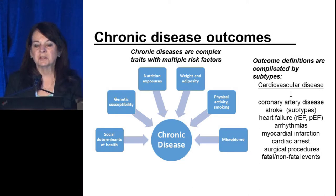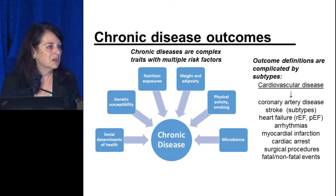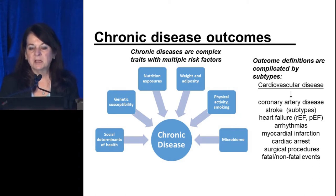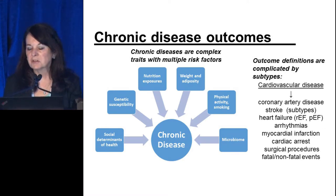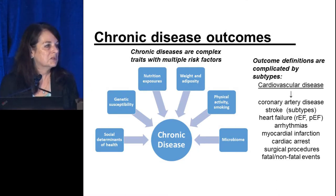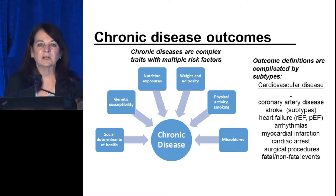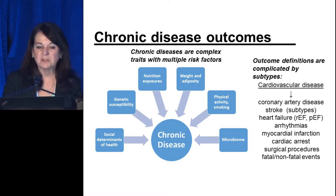The outcomes definitions are also complicated by subtypes. Iron deficiency anemia is relatively easy to diagnose and measure with a test. With cardiovascular disease, however, we have many subtypes: various forms of coronary artery disease, stroke — which can be occlusive or hemorrhagic — heart failure with reduced or preserved ejection fraction, arrhythmias, myocardial infarction, cardiac arrest. Some studies measure cardiovascular disease by various surgical procedures, and then there's either fatal or non-fatal events. Each chronic disease has many such subtypes.